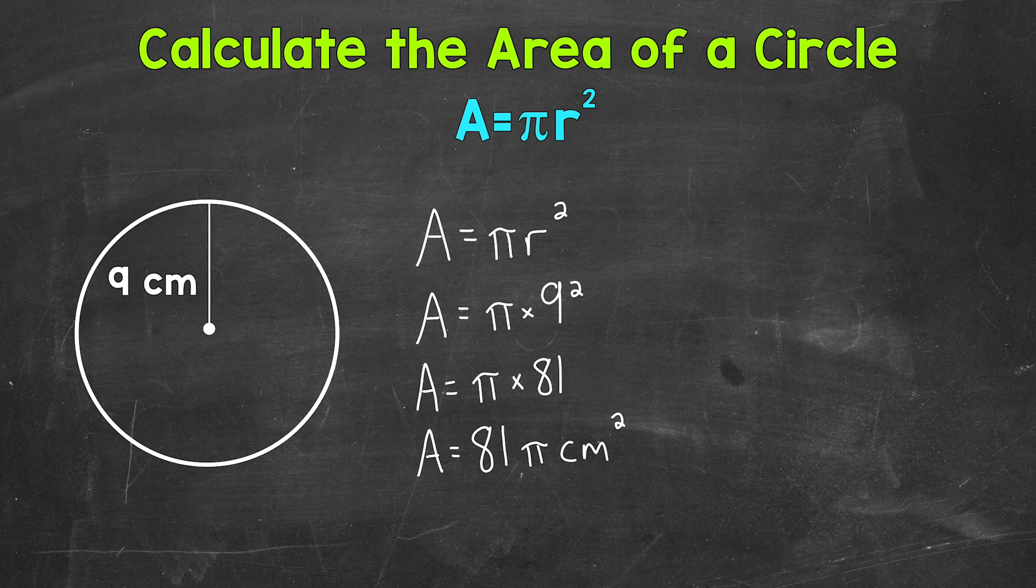So again, one way to write our answer is in terms of pi. So we have our number and then our pi symbol followed by the unit of measure squared. Now another way we can do this is to use an approximate version of pi. Like I mentioned earlier, we're going to use 3.14.